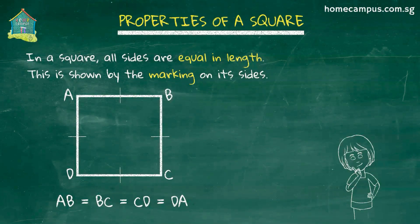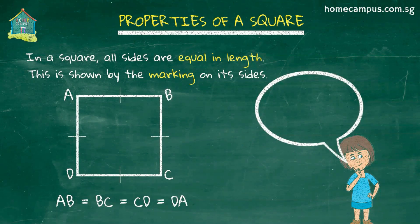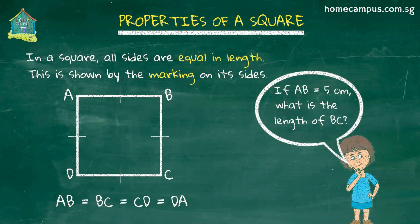Now in this square, if AB is equal to five centimeters, what do you think will be the length of BC? We know that all sides of a square are equal in length, so the length of BC will be five centimeters.